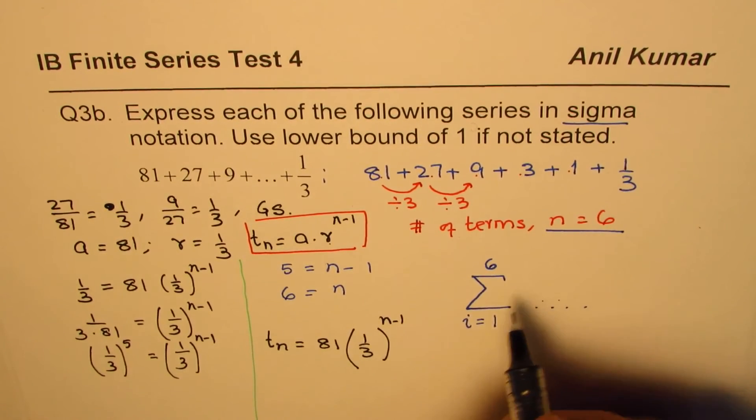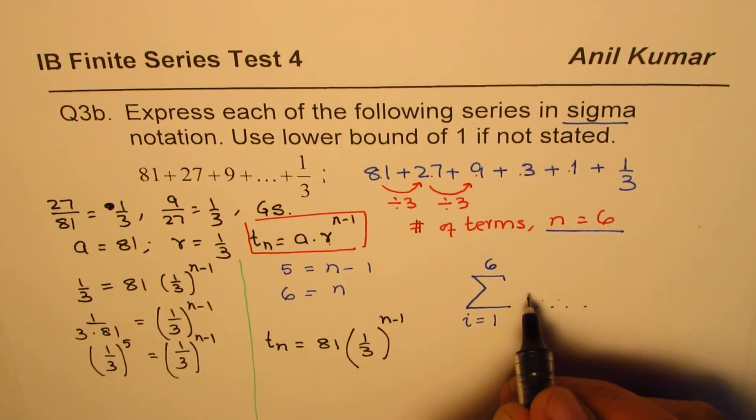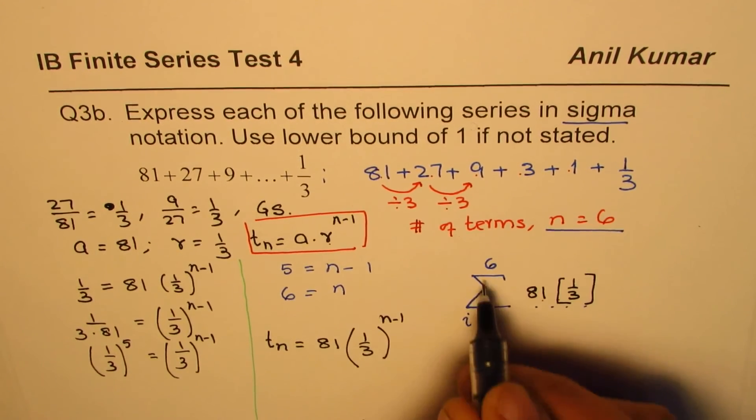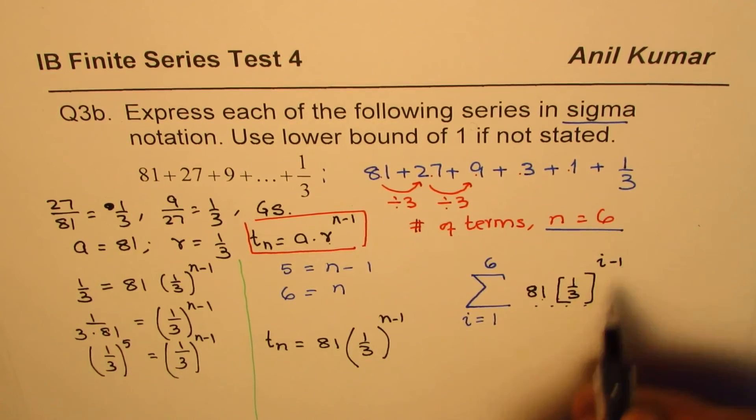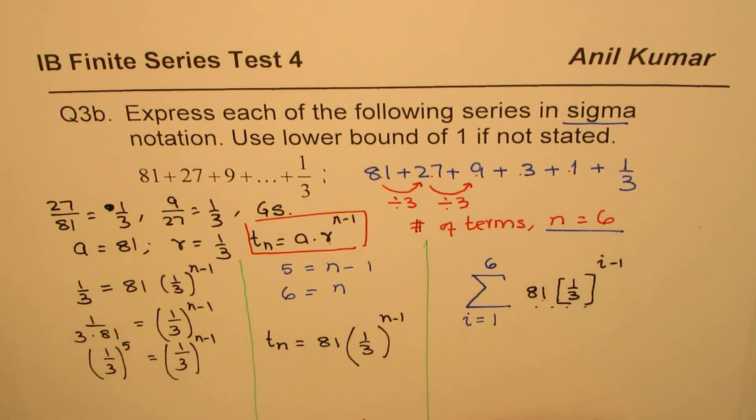So what we can do here is, we can write sigma notation with the help of this general expression as 81 times within bracket 1 over 3 to the power of i minus 1. So that becomes the sigma notation for the given question.